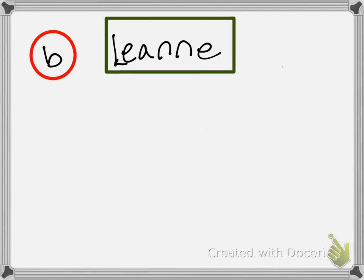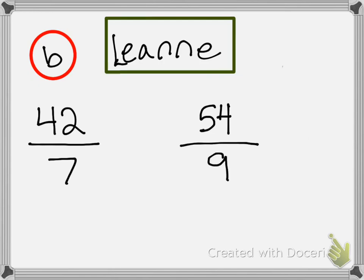Our next teacher is Leanne. Come on up, Leanne. I got it right up here. So Leanne, this question says 42 flowers in seven vases versus 54 flowers in nine. So I want you to write it. Here's our pencil.